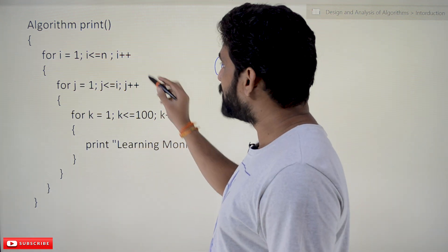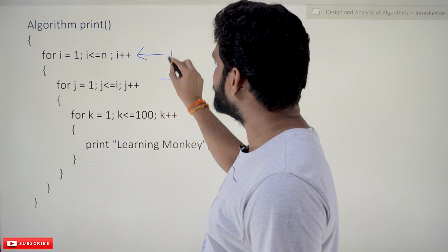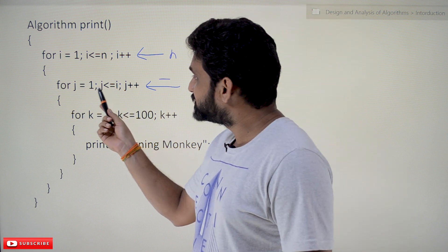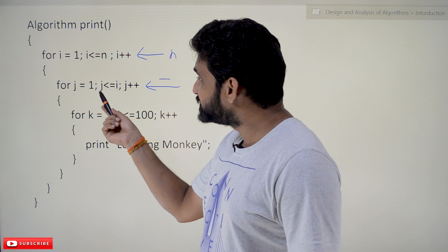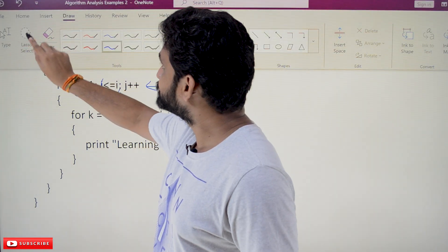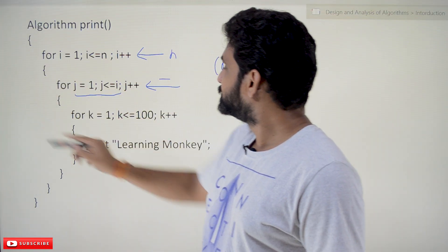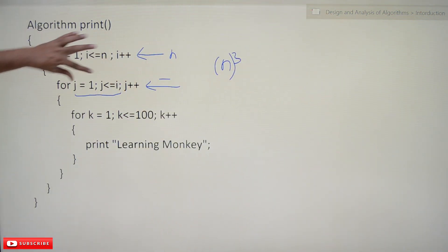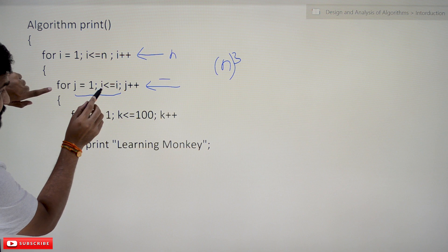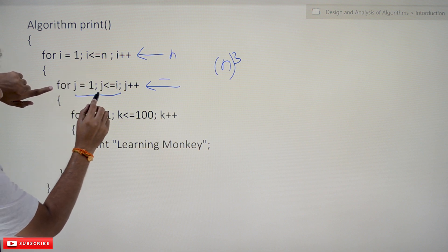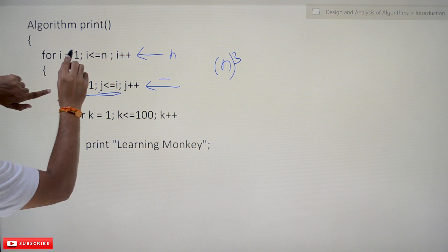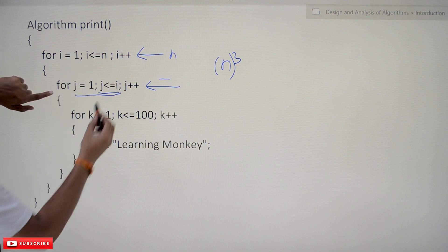So, how many times does the outer loop iterate? It iterates n times. Now how many times does the second loop iterate? There is a dependency here — the condition is j less than or equal to i. This means the number of times the j-loop iterates depends on the current value of i.